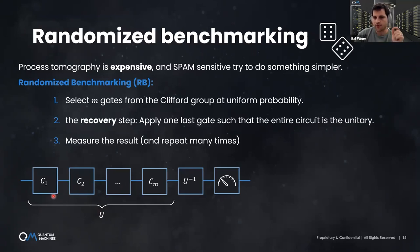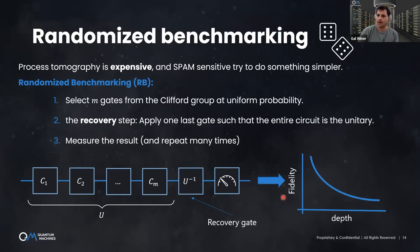For large systems, process tomography is impractical, as we said, and it has some additional drawbacks I didn't mention. For example, it's highly dependent upon state preparation and measurement errors, or SPAM, as they're called in the business. Instead, the gold standard in characterizing a process on a real qubit in the past decade or so has been randomized benchmarking. When you see a gate fidelity quoted on a paper, it most probably was RB or some close cousin of RB.